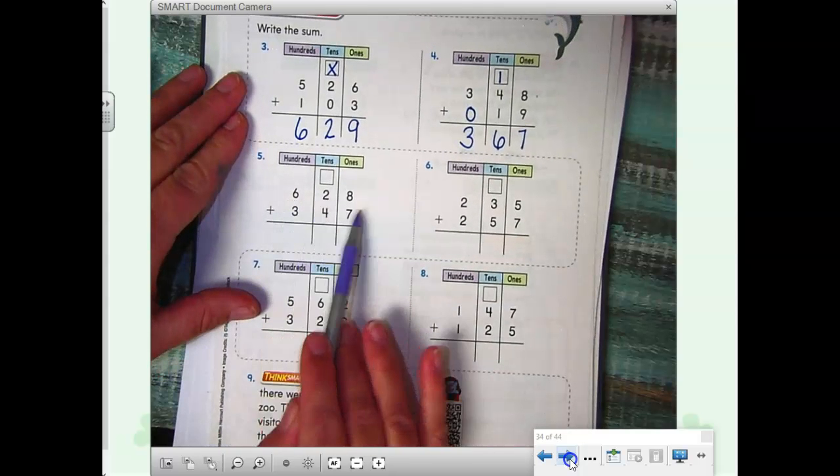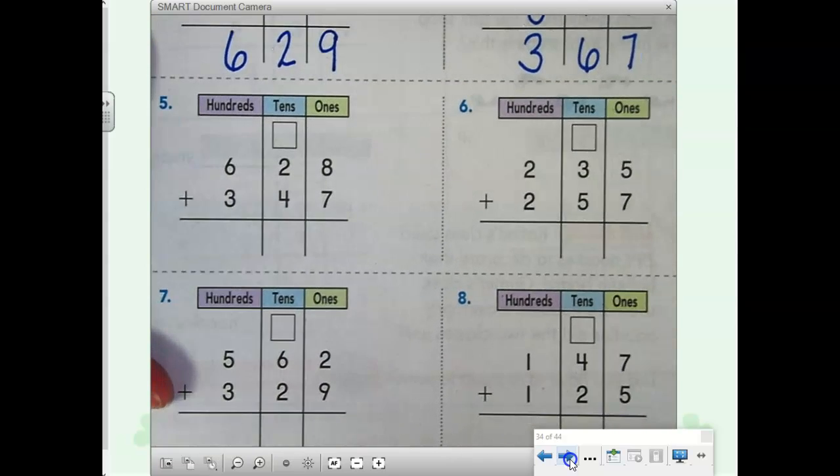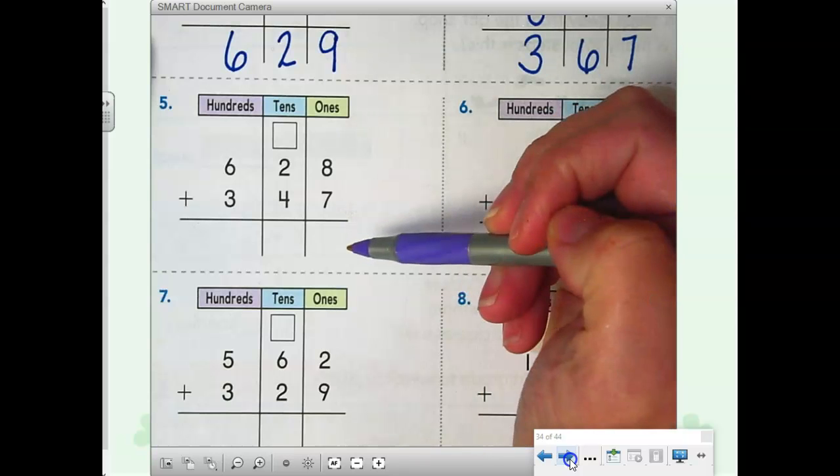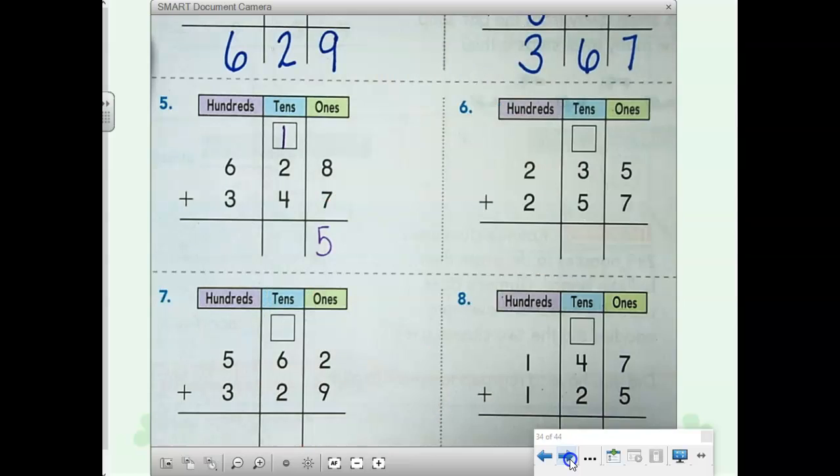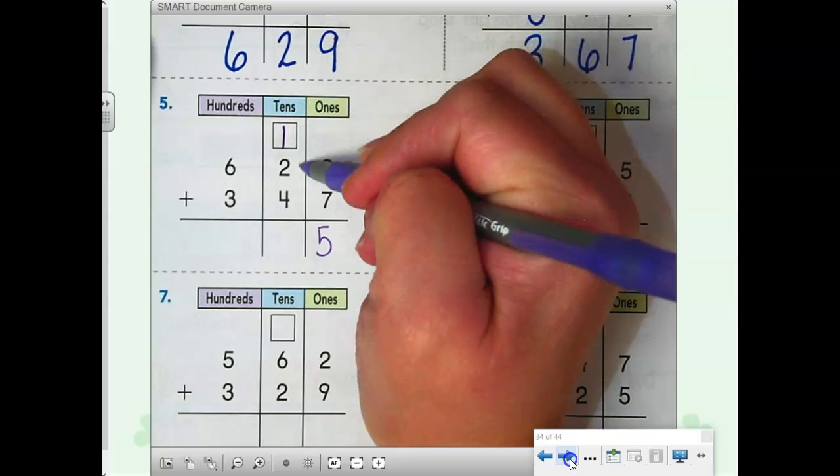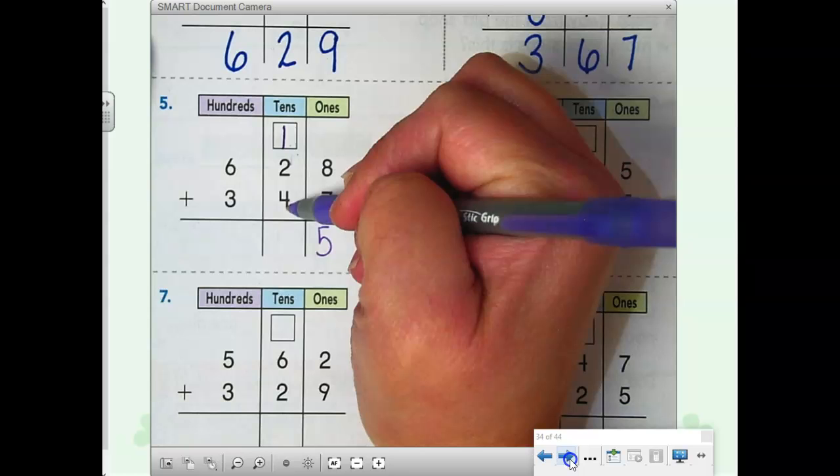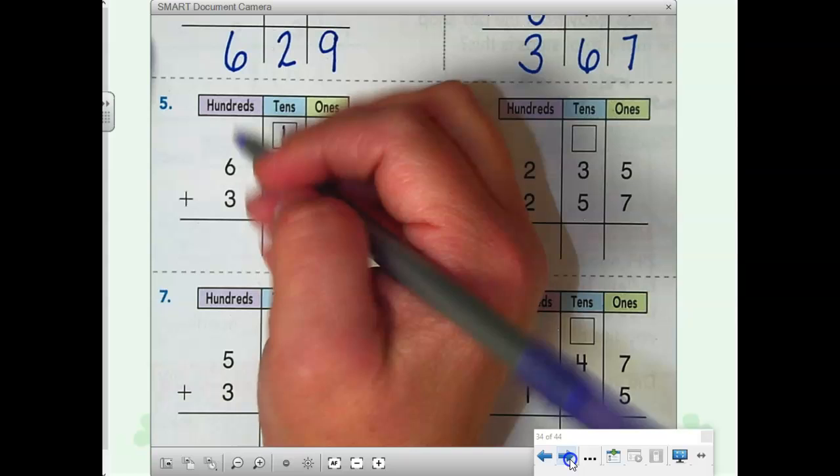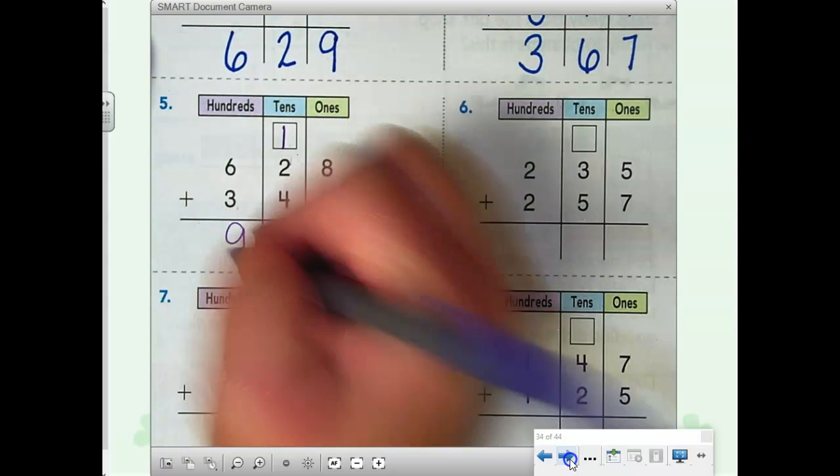We have 628 plus 347. Start in our ones. We always start with our ones column when we add. 8 plus 7 is 15. 15 is 1 ten and 5 ones. Now we have three numbers to add in our tens column. Let's add the three numbers. 1 plus 2 equals 3, 3 plus 4 equals 7. And then we have our hundreds column, 6 plus 3 equals 9. Our answer is 975.